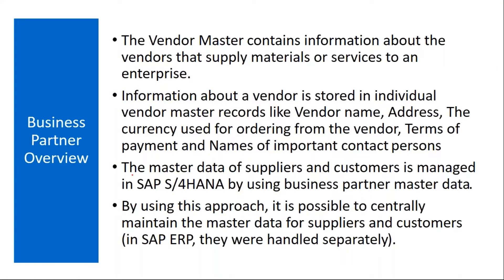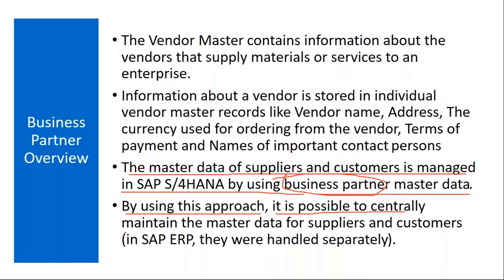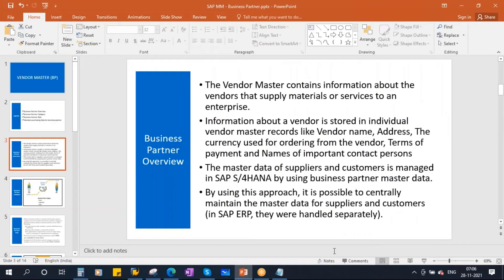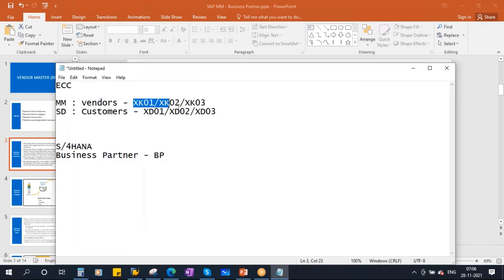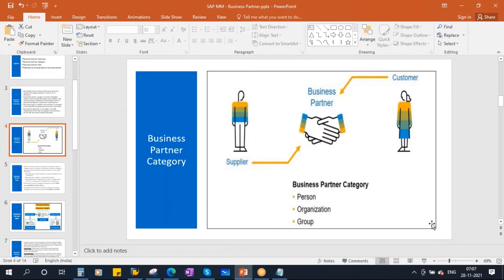The master data of suppliers and customers is managed in S/4 HANA using Business Partner master data. Using this approach, it is possible to centrally maintain the master data for both suppliers and customers. In SAP ECC they were handled separately with different transaction codes, but now there is a common one.